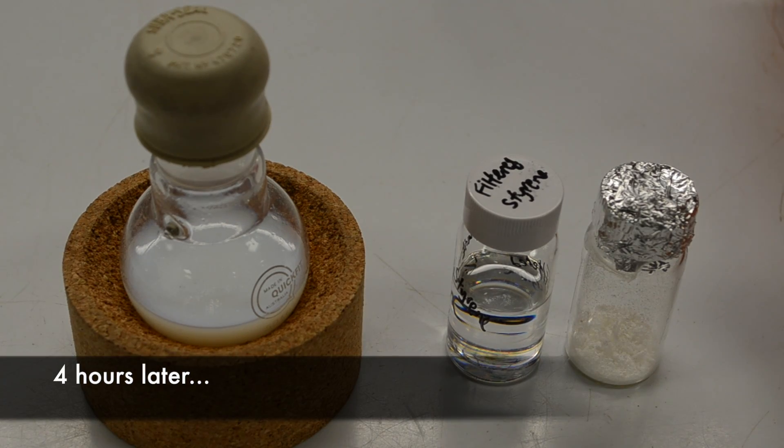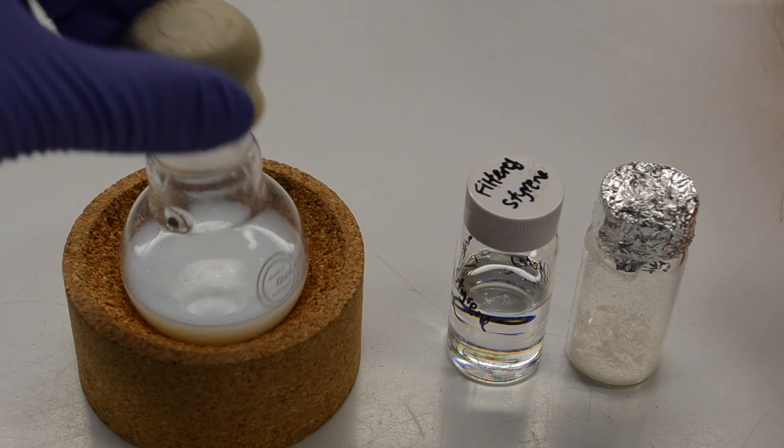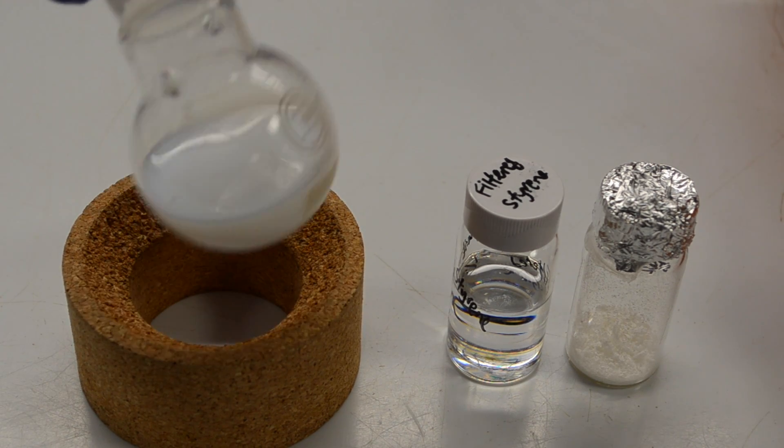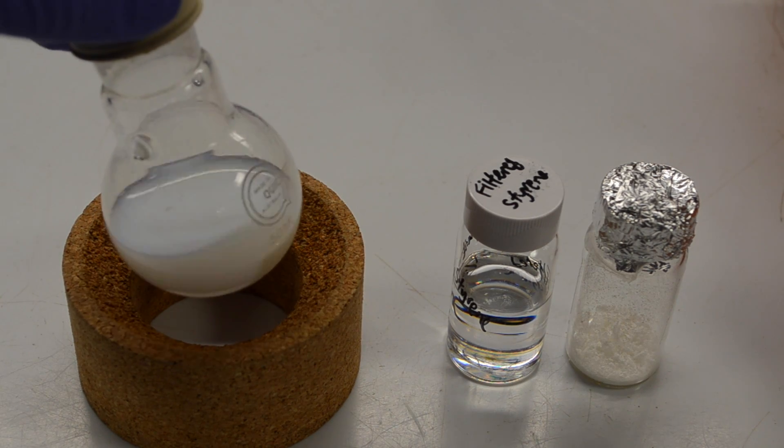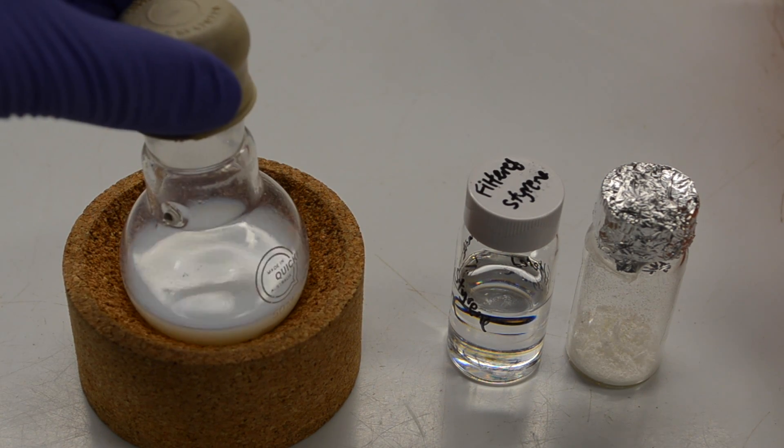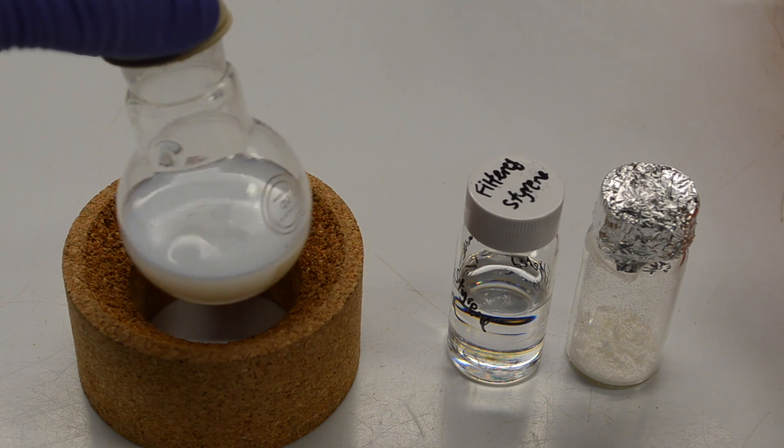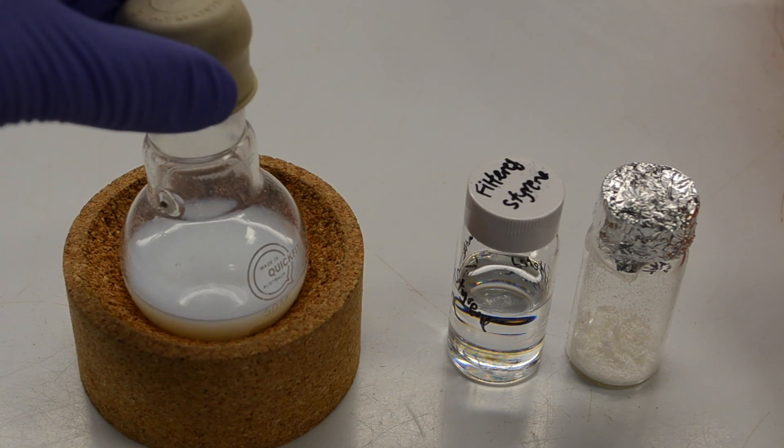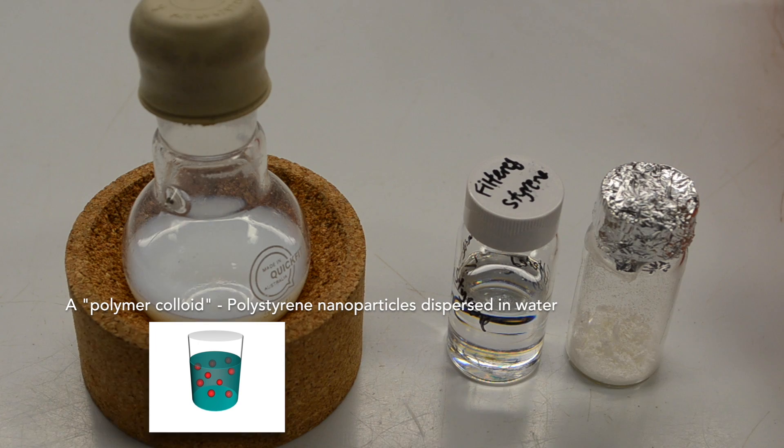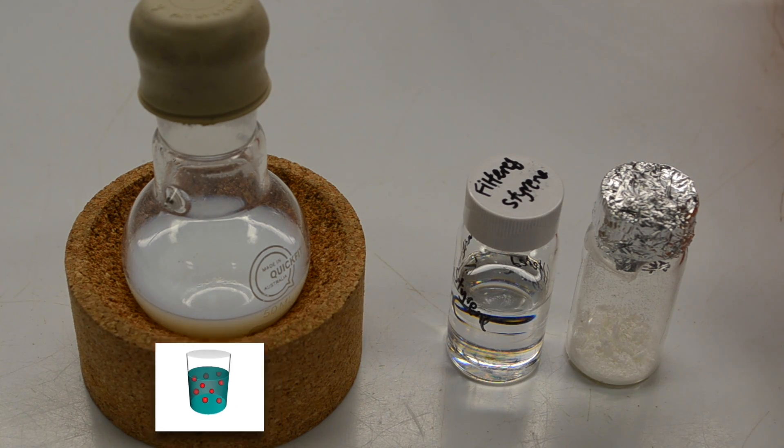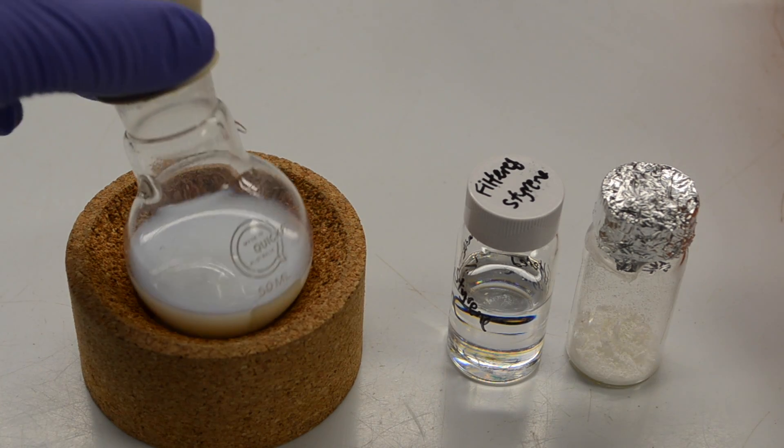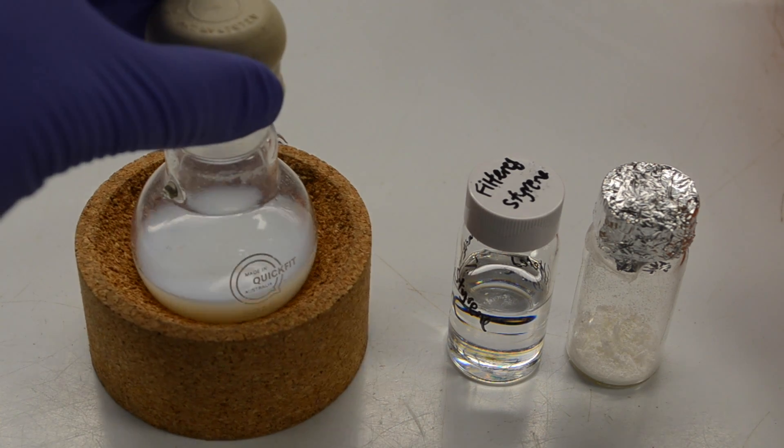So we've reached the end of our emulsion polymerization reaction now. And what you can see is that our final product kind of looks like milk. It's a very easy to flow white liquid that has the viscosity of water. And what we've made is a dispersion of polymer nanoparticles, polystyrene dispersed in that water, stabilized by our surfactant, our soap.